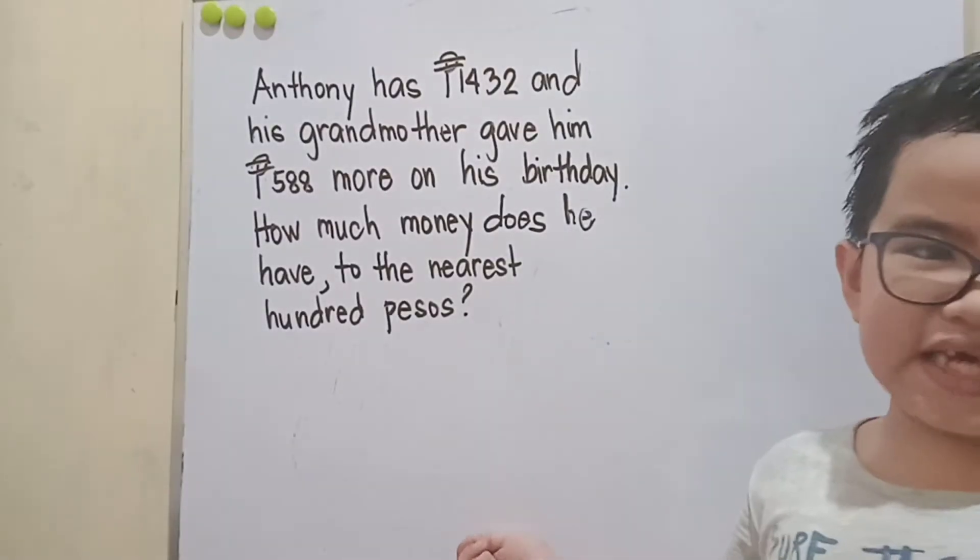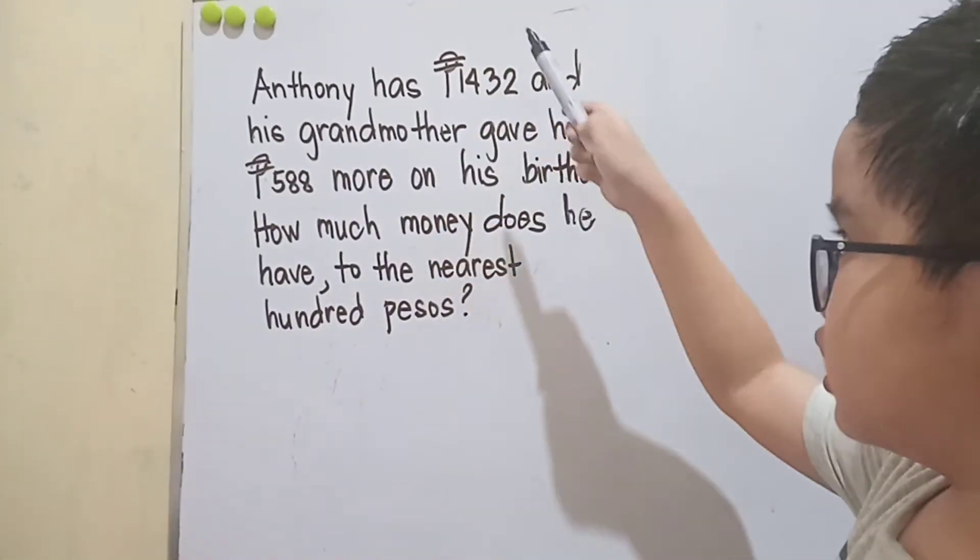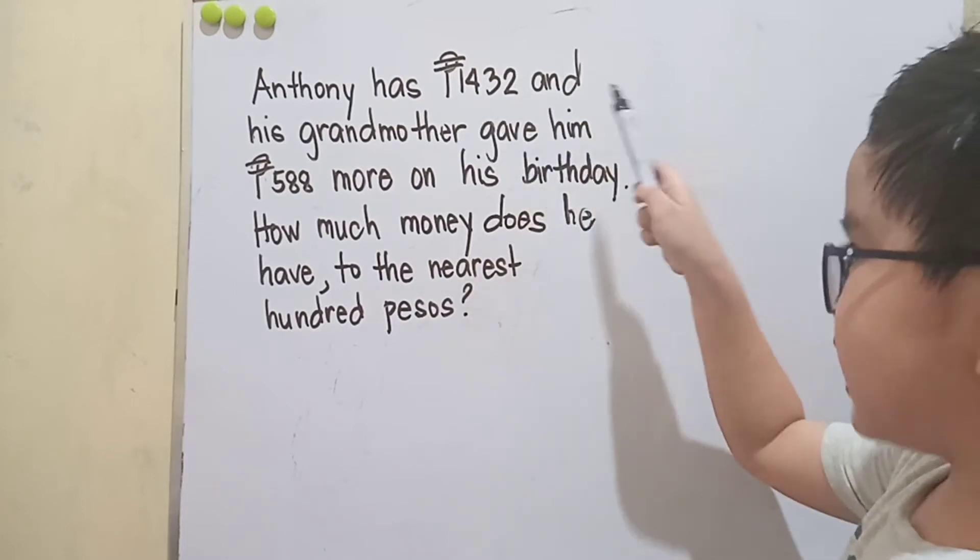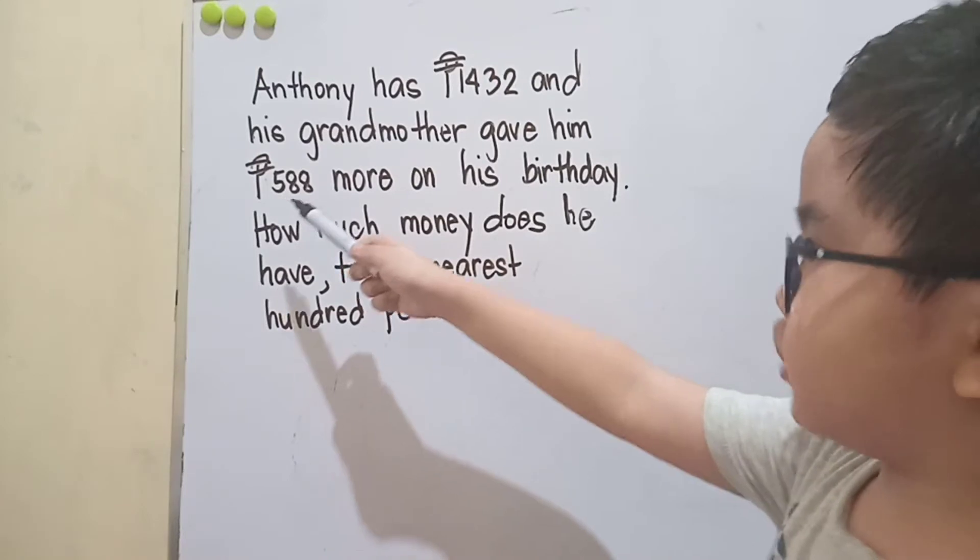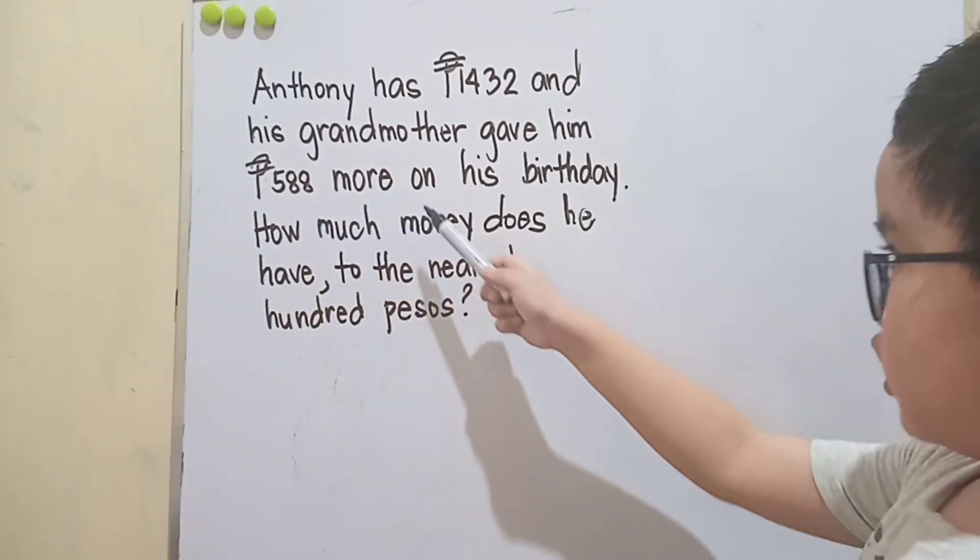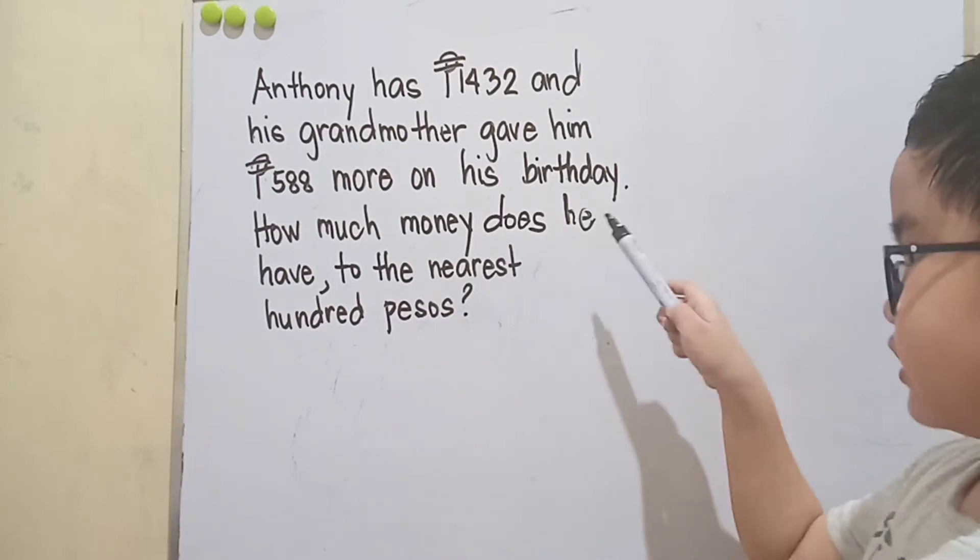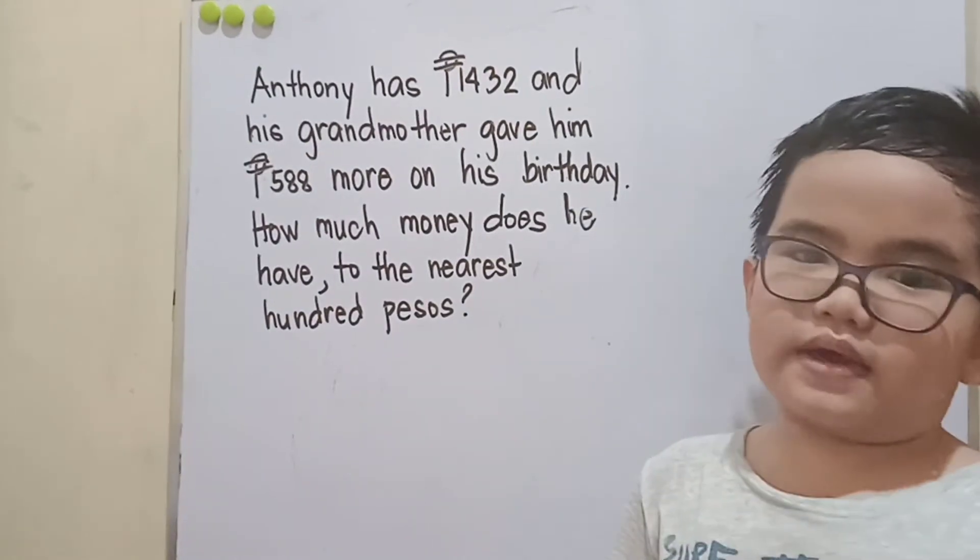Now this is the third problem. Anthony has 1,432 pesos and his grandmother gave him 588 pesos more on his birthday. How much money does he have to the nearest hundred pesos? Come on, let's solve it.